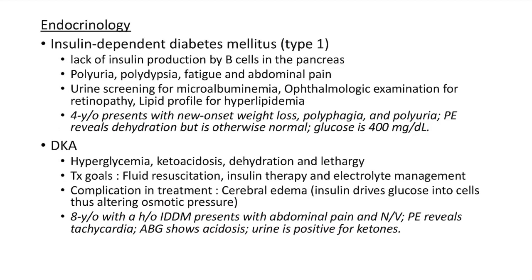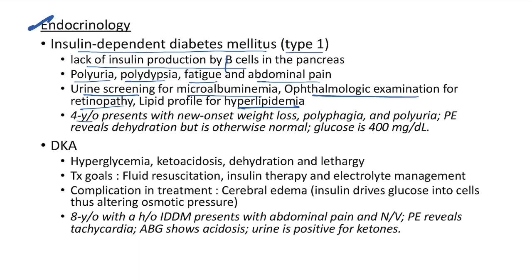Pediatric endocrinology — type 1 diabetes mellitus: lack of insulin production by beta cells in pancreas. Clinical features include polyuria, polydipsia, fatigue, and abdominal pain. Screening: urine for microalbuminemia, ophthalmologic examination for retinopathy, and lipid profile. Case: 4-year-old presents with new onset weight loss, polyphagia, and polyuria; dehydration on examination; glucose is 400 mg/dL.